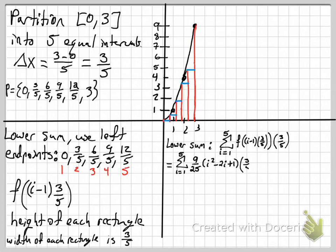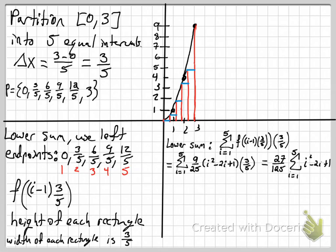We can pull out the constants: 9 times 3 is 27, and 25 times 5 is 125. Then we have the sum from i equals 1 to 5 of (i² − 2i + 1). We have formulas for the sum of squares, the sum of i's, and for adding up 1 five times. So 27 over 125 is hanging out in front.